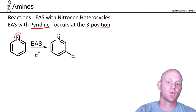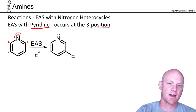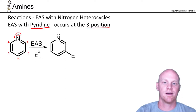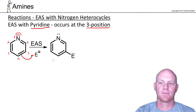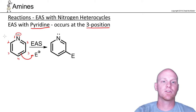Again, nitrogen is the one position. Then we have the two positions adjacent to that, the three positions adjacent to that, and the four position. When we do EAS on pyridine, it's going to happen at the three position. There's nothing especially remarkable about why position three is favored on its own.